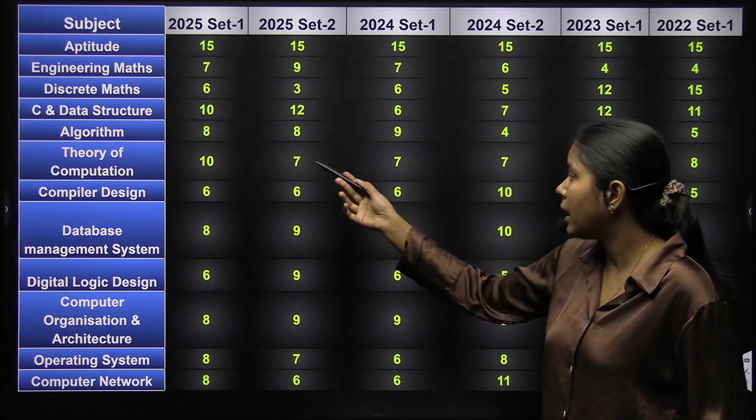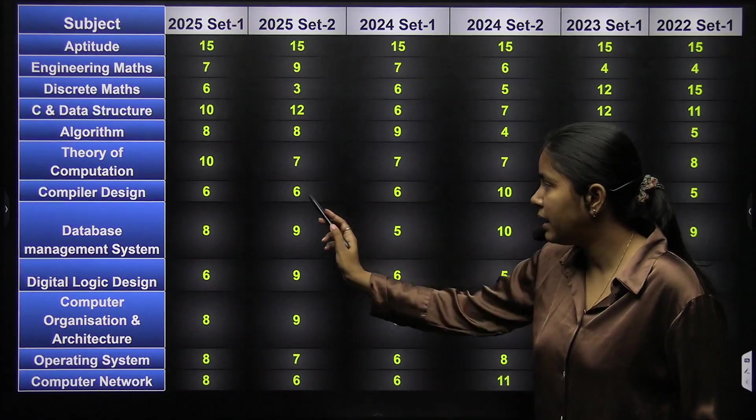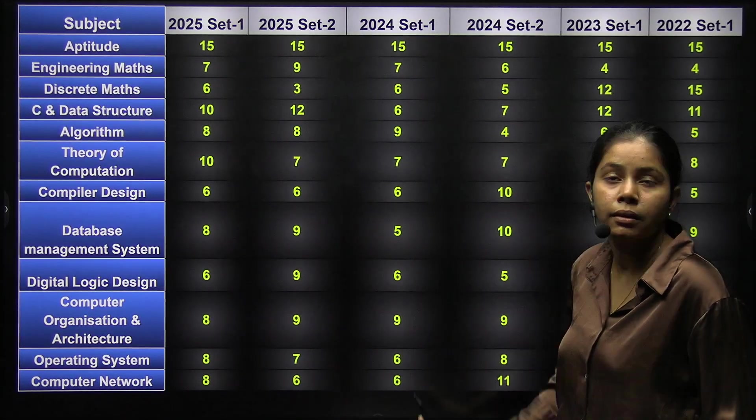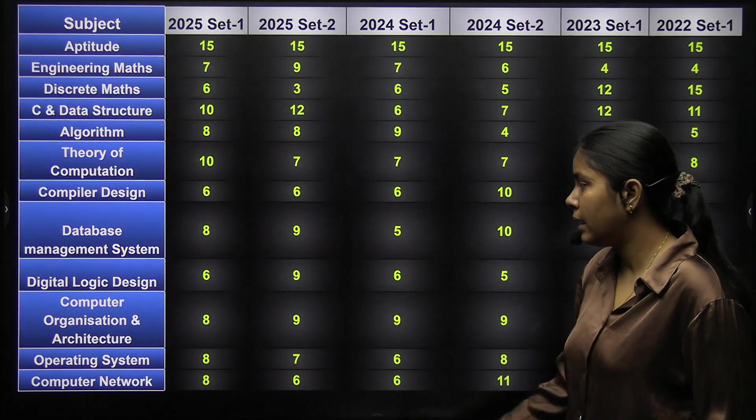TOC 10 and 7 marks, and compiler design 6 and 6 each in each year.